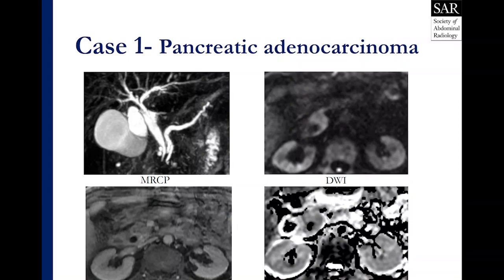Here are a number of example MRI images. The MRCP image in the top left shows the double duct sign — you've got a diffusely dilated common bile duct and a diffusely dilated main pancreatic duct. On the top right, there's diffusely increased signal within the pancreatic head tumor with concurrent low signal on ADC images in the bottom right. And on the bottom left post-contrast image, there is very vague heterogeneous enhancement of the pancreatic head, but overall hypoattenuating compared to the adjacent parenchyma.